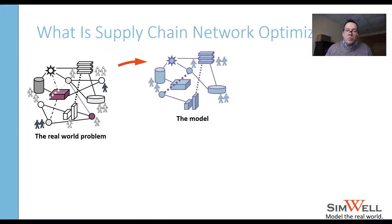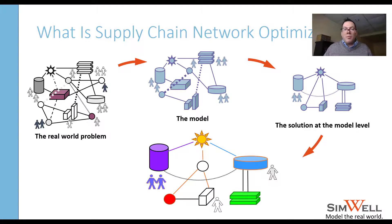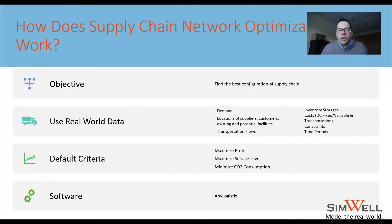What we help people do is move that problem into a model — in this case, an optimization model. We also do simulation models. We move the problem and the process into the model, where there's no cost and no risk. Once we're confident in the solution, we implement the supply chain network optimization solution into the real world.